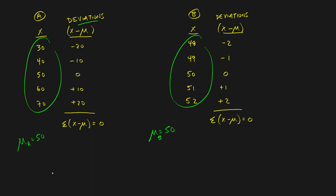I explained why the range was a bad idea in the previous video. Now I want to focus on deviations — a different approach. Deviations tell us how far any one number is from the mean: thirty is twenty below the mean, forty is ten below the mean, and so on. But when we tried to average all the deviations to get a single value, we were left with zero for both Company A and Company B, because the negatives cancel out with the positives.